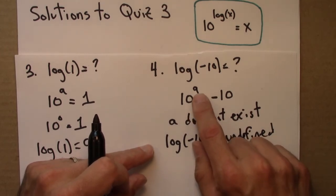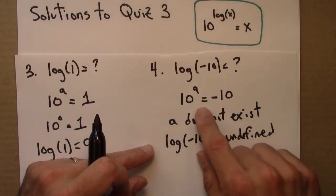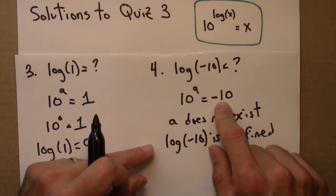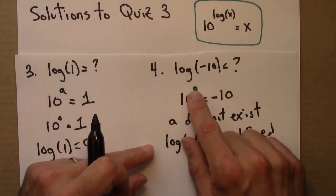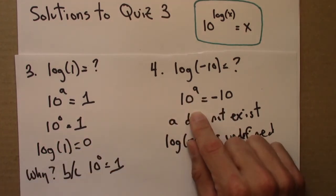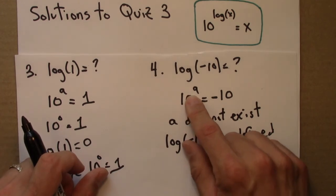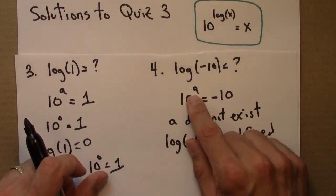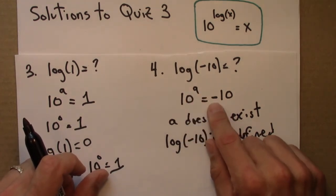So again, there is no exponent that gives you a negative answer here. So 10 to the something, that means you're multiplying 10 by itself some amount of times. Whatever you do, you're going to end up with a positive number. So there's no way to get a negative out here.